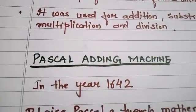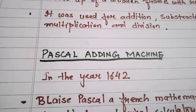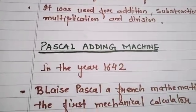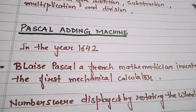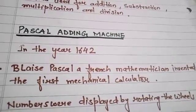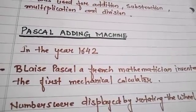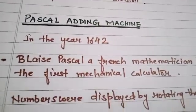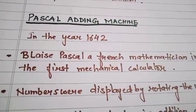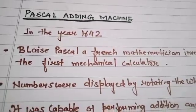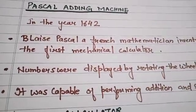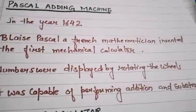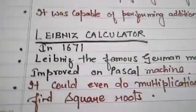Pascal's adding machine was invented in the year 1642. Blaise Pascal, a French mathematician, invented the first mechanical calculator. Numbers were displayed by rotating the wheel. It was capable of performing addition and subtraction.